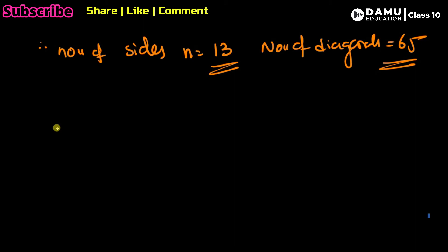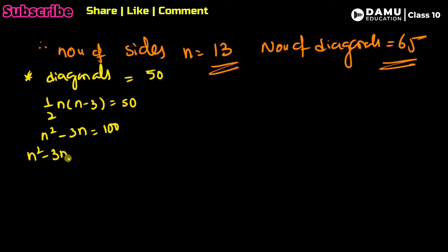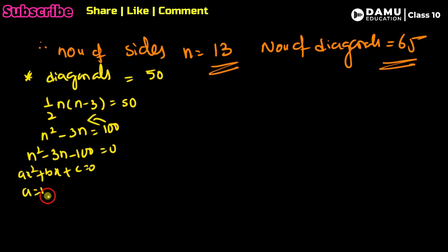For the second part: is there a polygon with 50 diagonals? We set diagonals equal to 50: (1/2) × n × (n − 3) = 50, so n² − 3n = 100, giving n² − 3n − 100 = 0. Here a = 1, b = −3, c = −100.